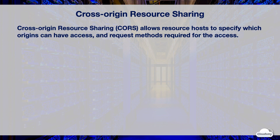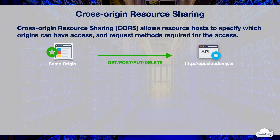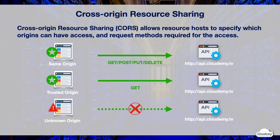CORS stands for cross-origin resource sharing. When you build websites, sometimes you want to load scripts to access data from other origins. For instance, you can incorporate scripts to load stock exchange information from another financial news website such as Yahoo Finance, and display it on your website. CORS enables resource hosts to specify which origin should have access to which resource, and the HTTP methods which requests from those origins need to use in order to have access. It's common to use CORS policy to allow API access from trusted origins. You can define the trusted origins on your CORS policy. For instance, you can allow read and write requests to your APIs if the requests are from the origin on your allowed list. You can define specific HTTP methods allowed to access your APIs from trusted origins, and restrict access if requests are from unknown origins.